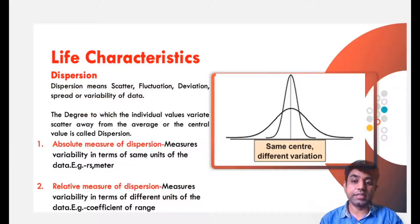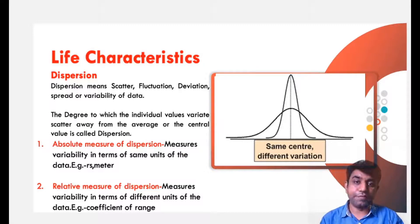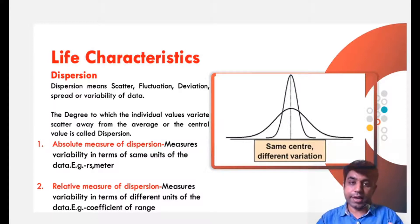Now let us understand the second life characteristic, that is dispersion. In a broader term, dispersion is something which has fluctuation — which has variation. Here we are talking about variation of data. Whatever data we have for the product, maybe data of lifetime or maybe an operation parameter of any product — how that data varies, that is nothing but dispersion, the variation in the data.